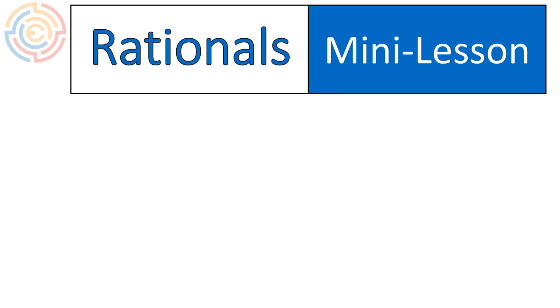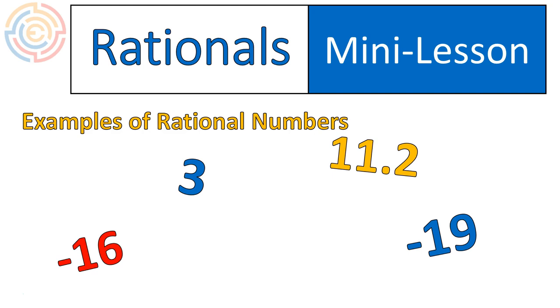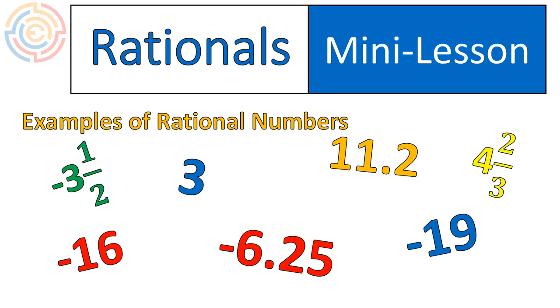Rational numbers. First off, let's talk about what they look like. Here are some examples of rational numbers. You can have negative 16, negative 19, positive 3. So positive and negative numbers, but you can also add in decimals and fractions. And that's what's going to change things up in this lesson versus the lesson about adding integers. If you need a quick recap on just adding integers without the decimals and fractions, go back to the previous lesson and then come to this one.